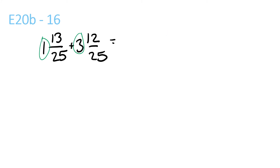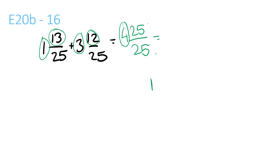1 plus 3 is 4. 13 plus 12 is 25 over 25, which is equal to 1, since 25 and 25 are the same. Then 4 plus 1 is 5.